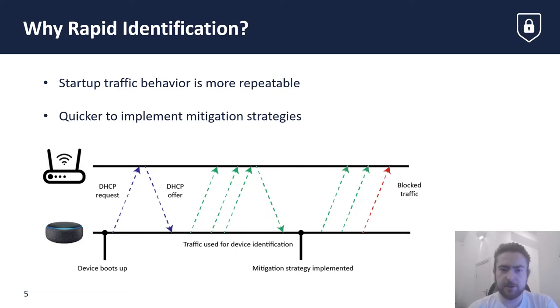Startup traffic is also less likely to be affected by user behavior and usage patterns, since we can assume there will be a period of zero or very little usage immediately after the device turns on. By performing the identification as soon as a device is booted up and connected to the network, device-specific mitigation strategies can be implemented more quickly, and privacy threats can be reduced immediately.